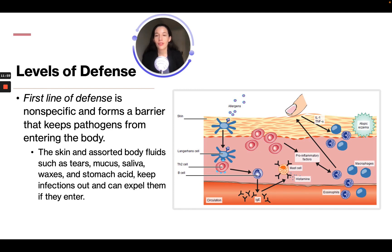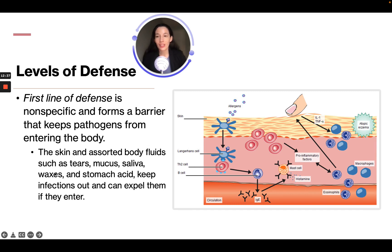The first line of defense is nonspecific and forms a barrier that keeps pathogens from entering the body. The skin and assorted body fluids such as tears, mucus, saliva, waxes, and stomach acid keep infections out and can expel them from entering. The skin is protecting against bacteria and other pathogens. Make sure to know these lines of defense for the test.